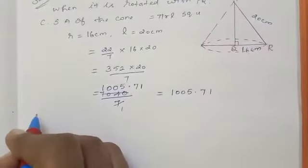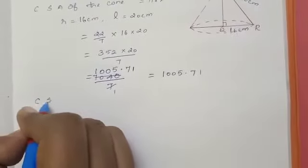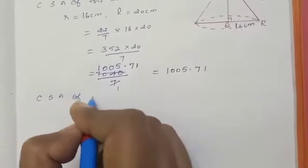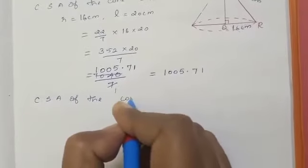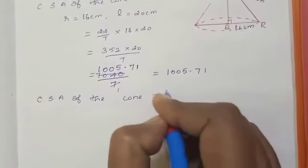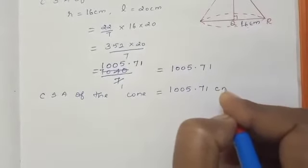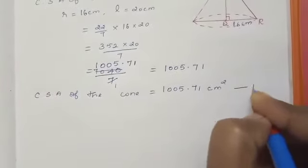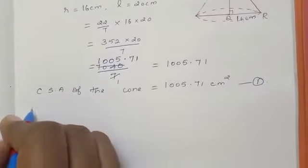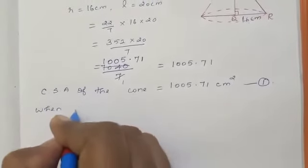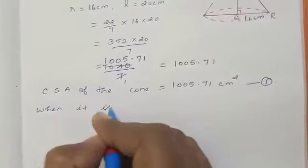So when we rotated with the PQ means we can get the CSA of the cone 1005.71 cm squared. This is first one. Next, when we rotated with the QR.